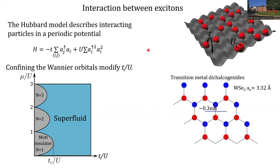They are composed by one transition metal and two chalcogen atoms in a honeycomb array that is monoatomically thin, and it has been demonstrated that one can harness the properties of these materials to increase or reduce the hopping term T of the Hubbard Hamiltonian to enhance the interactions in the material.